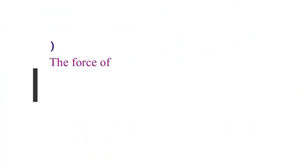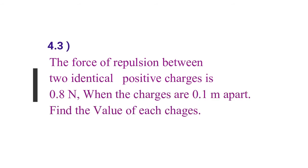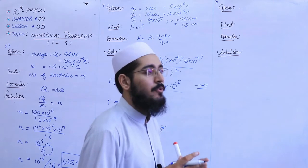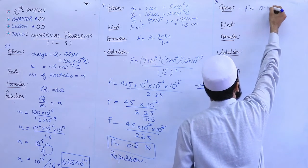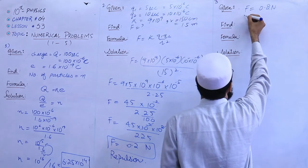Moving to question number 3. The statement is: the force of repulsion between two identical positive charges is 0.8 Newton when the charges are 0.1 meter apart. Find the value of each charge. So we need to find out how much charge is available on each identical charge. From the given data: force of repulsion is equal to 0.8 Newton, and the distance between the two identical charges is 0.1 meter.